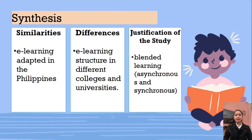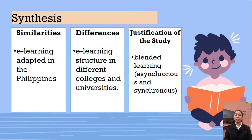Synthesis: The similarity is that e-learning was adopted in the Philippines — they shifted to online classes because of the pandemic. The difference is that e-learning is structured differently across colleges and universities, with different types of online platforms such as Zoom, Google Meet, and Edmodo, as well as modules. The distinctiveness of this study is blended learning. Teachers have different styles of teaching: asynchronous and synchronous. Asynchronous does not happen at the same time, while synchronous happens at the same time.